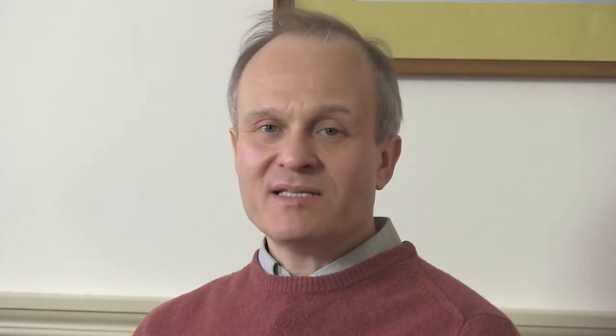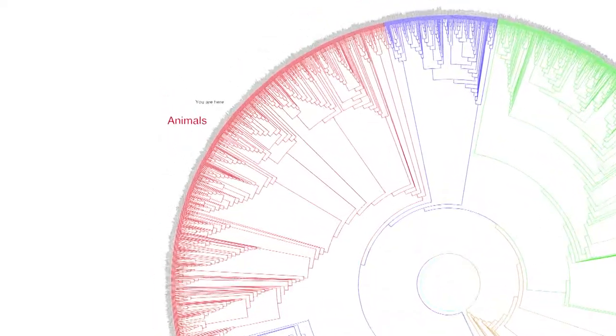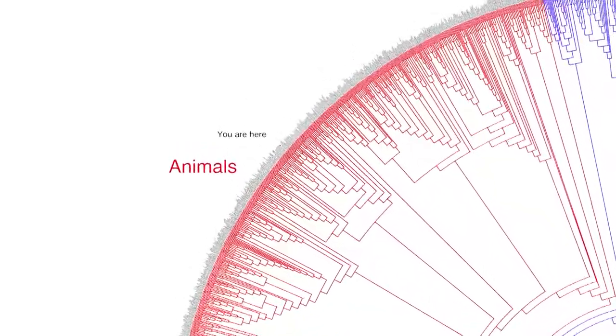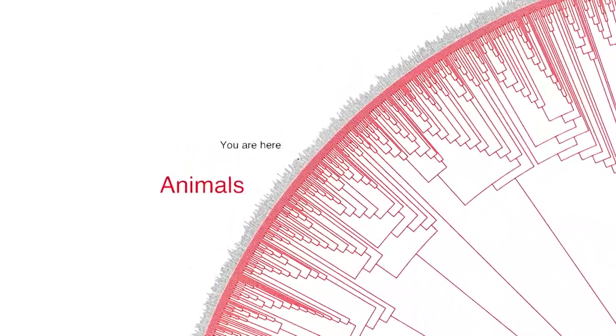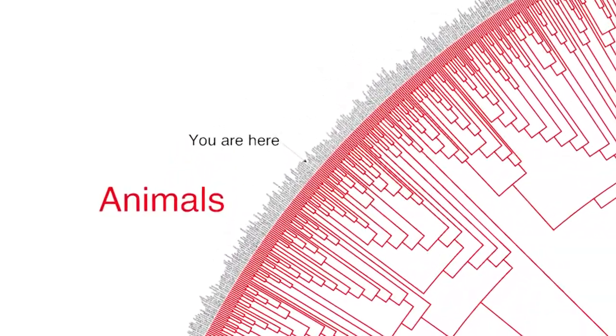Our plan is to begin by looking at evidence for evolution and take a broad look at the structure of evolutionary theory. Then in the second module, we'll be diving into understanding phylogenetic trees and how they can be used to make sense of biological diversity and structure our knowledge in an accurate way.